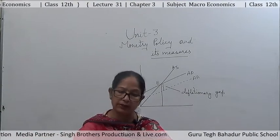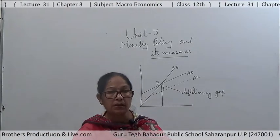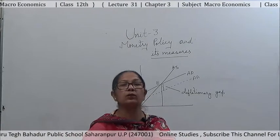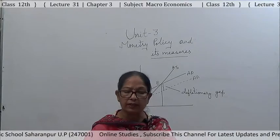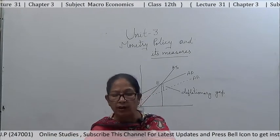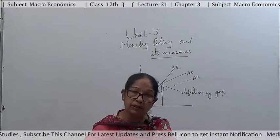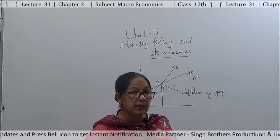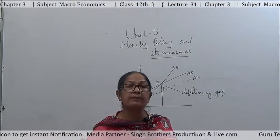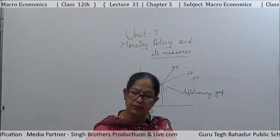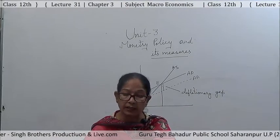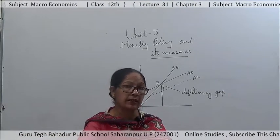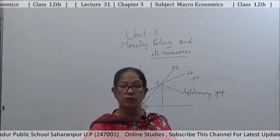So what may be the causes of deficient demand? All the reasons and impacts are just the reverse of excess demand. These include: fall in government expenditure, fall in the level of autonomous investment, fall in private consumption expenditure, and fall in money supply. The impacts include a fall in prices, fall in the level of income and output, and if there is continuous deficient demand it leads to a state of depression in the economy marked by overproduction.